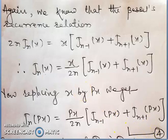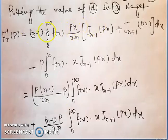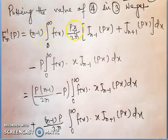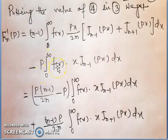Putting the values of jn(px) from equation 4 into equation 3, it becomes: fn'(p) = (n-1)∫₀^∞ f(x) * px/(2n) * [j_{n-1}(px) + j_{n+1}(px)] dx - p∫₀^∞ f(x)*x*j_{n-1}(px) dx.